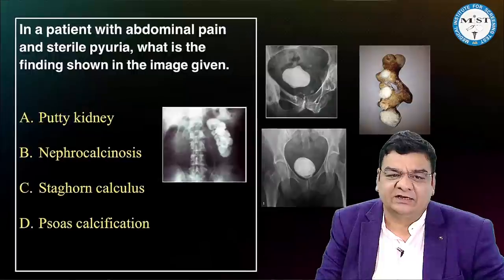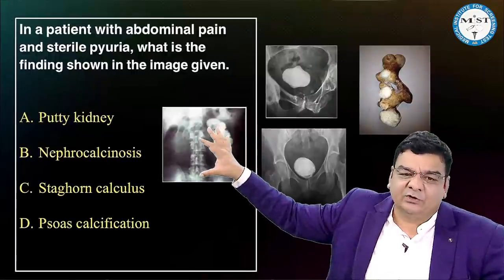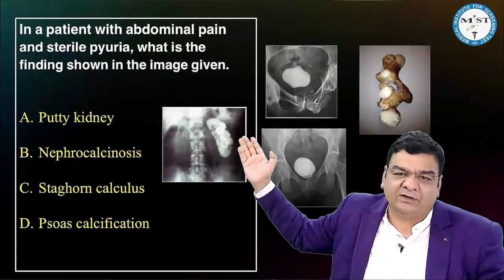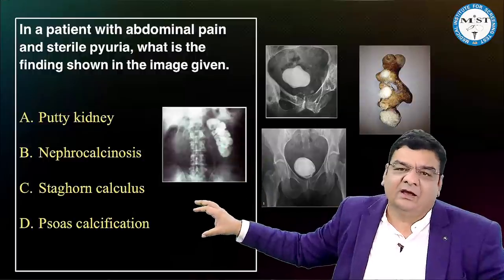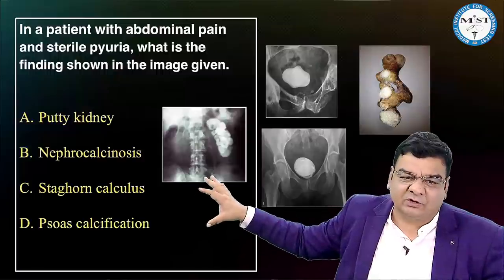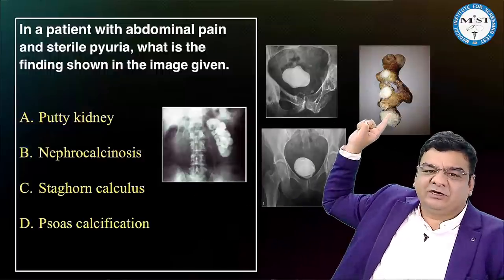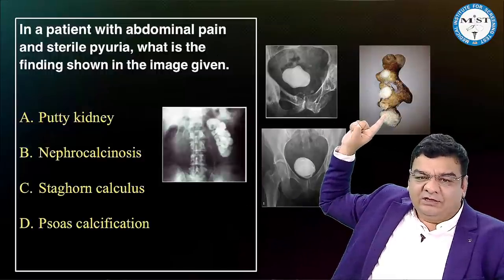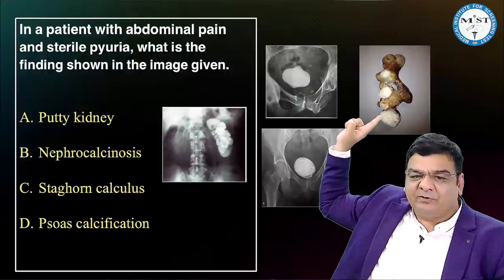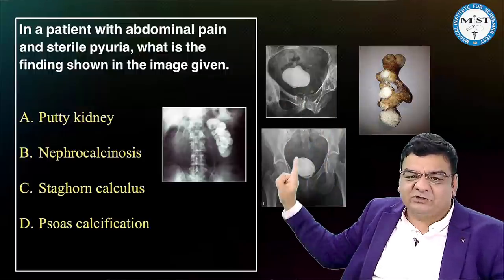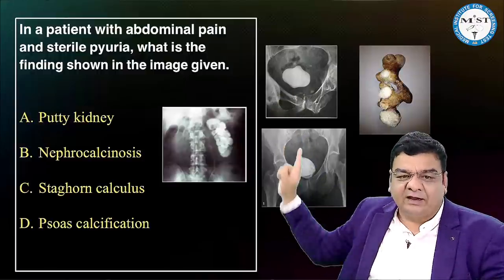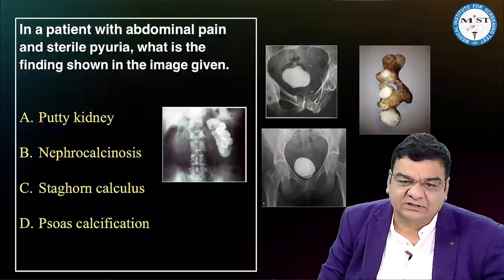Another hot area: image-based questions on renal tuberculosis — putty kidney, cement kidney, or thimble bladder. Try to differentiate this from a staghorn stone, which occupies the entire pelvicalyceal system in the shape of the pelvicalyceal system. Also, an image of bladder calculus (vesical calculus) has been asked in recent exams.